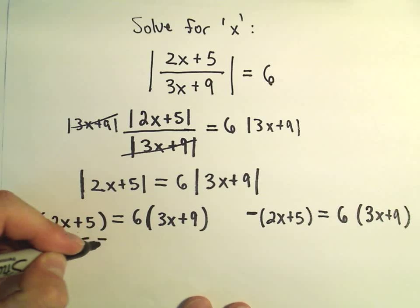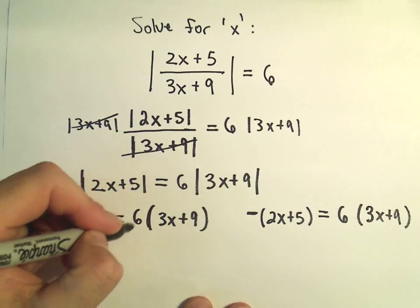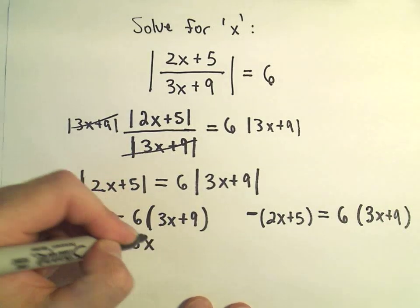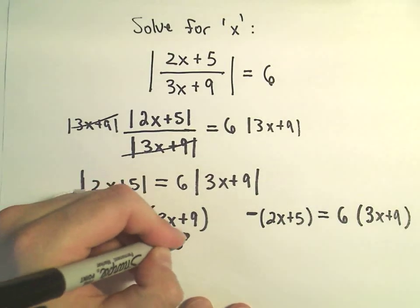So to solve the first one, we can just remove the parentheses, 2x plus 5. If we distribute the 6, we'll get 18x. 6 and 9 is positive 54.